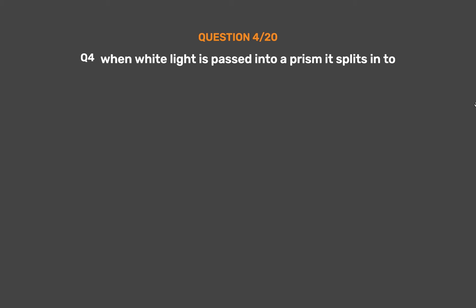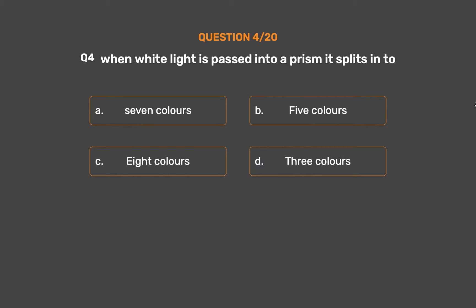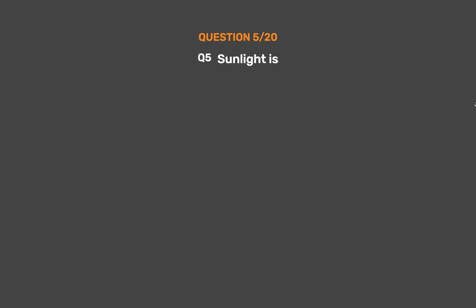Question number 4. When white light is passed into a prism, it splits into: option A, seven colors; option B, five colors; option C, eight colors; option D, three colors. The correct answer is option A, seven colors.